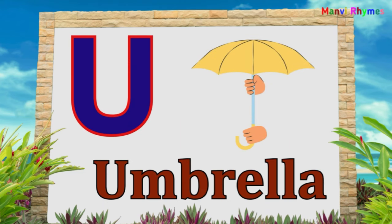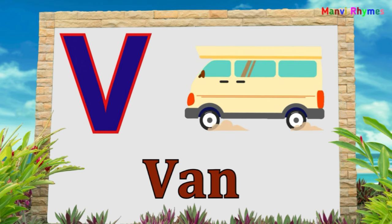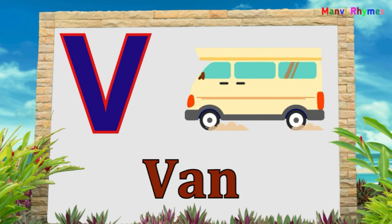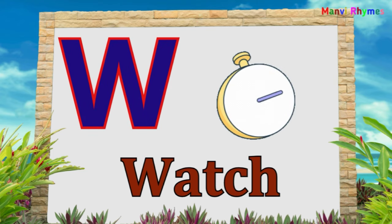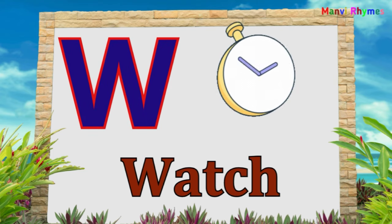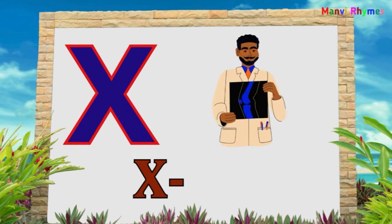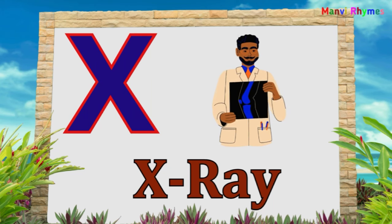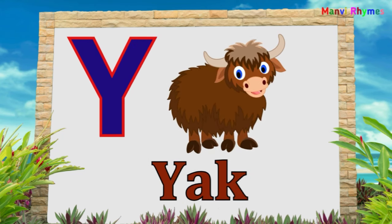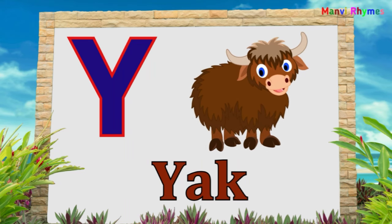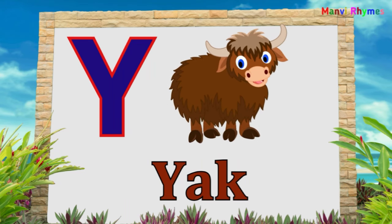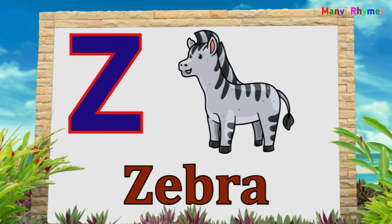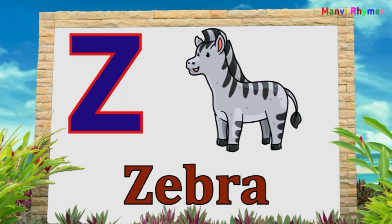U for Umbrella. V for Van. W for Watch. X for X-Ray. Y for Yacht. Z for Zebra.